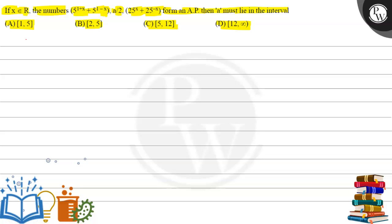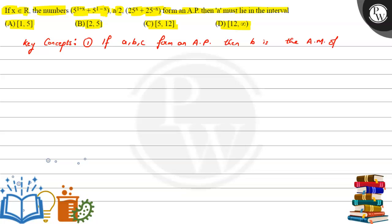Let's note down the key concepts for this problem. The first one is: if A, B, C form an arithmetic progression, then B is the arithmetic mean of A and C, that is B equals (A plus C) divided by 2. The second key concept is: arithmetic mean is greater than or equal to geometric mean.